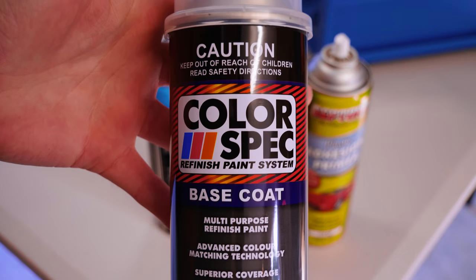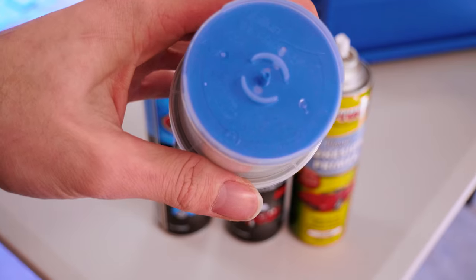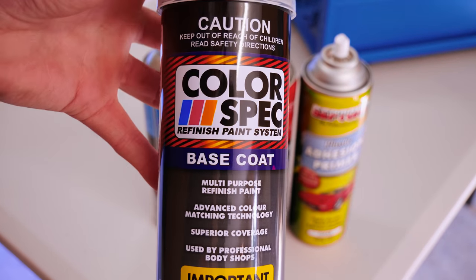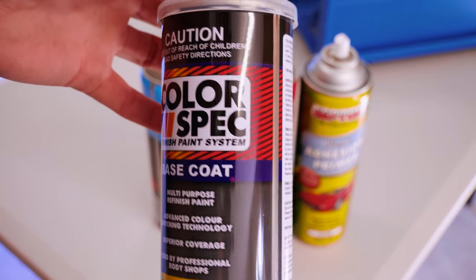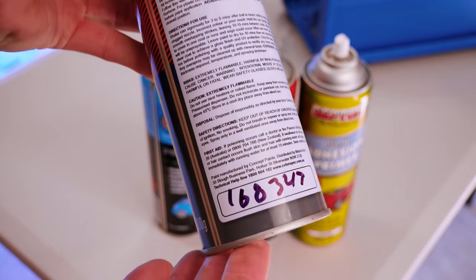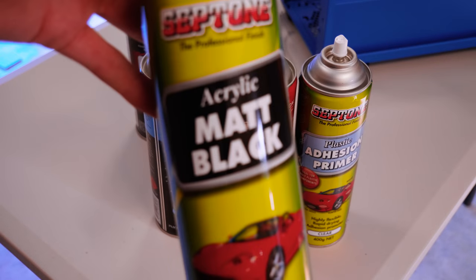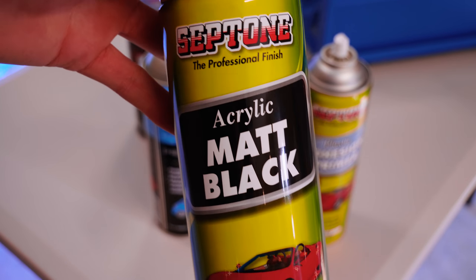Then, for the base coat itself, we're using color spec matched base coat. This is color matched to the Subaru M3Y Hyperblue paint color, which comes out really nice. And for our accent color, we have some generic matte black acrylic paint that would go really well as a sweet black offset.